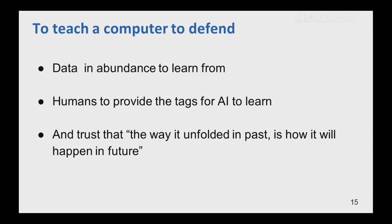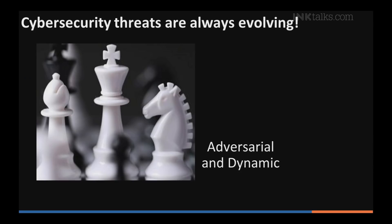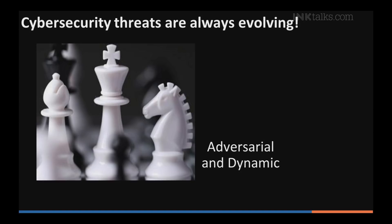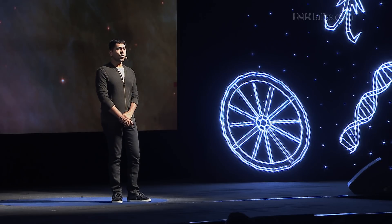The third assumption was that if I built a model that predicts an attack, I could keep using it to prevent attacks. It turns out, cybersecurity threats are always evolving. As a result, we need something that co-evolves as the threats evolve — something that sits alongside humans, learns over time, and adapts.